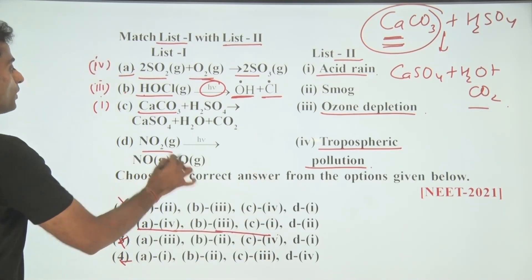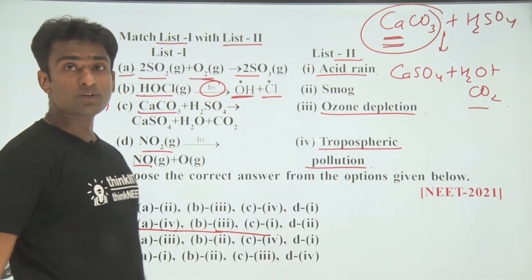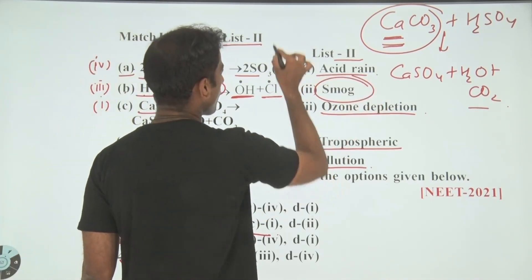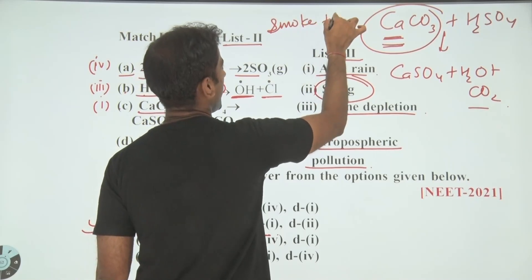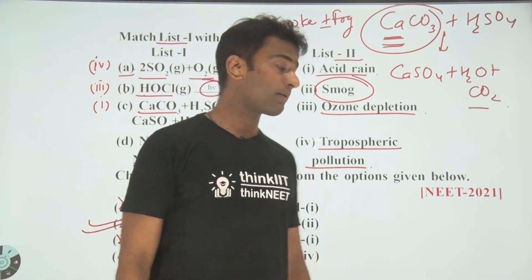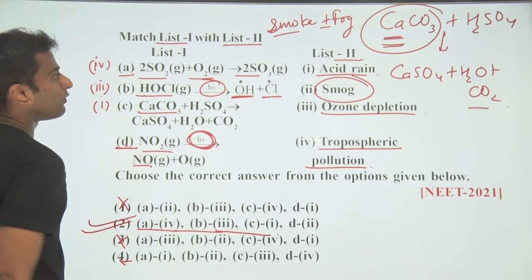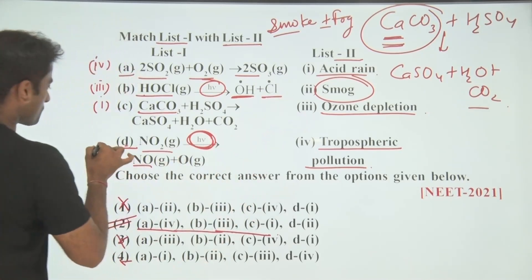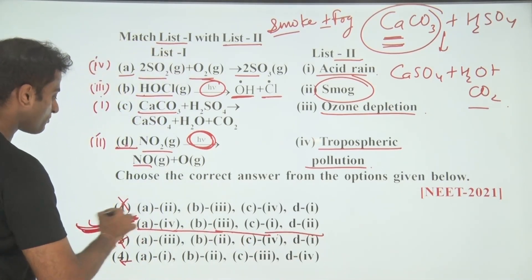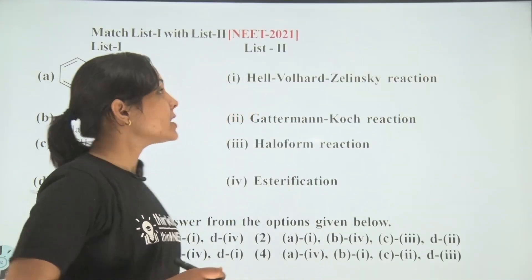Next, NO₂ (nitrogen dioxide) divides into nitric oxide and nascent oxygen. This is the reaction of photochemical smog — smoke and fog — happening in the presence of sunlight. So D matches with the second option. The second option is going to be your final and perfect answer.